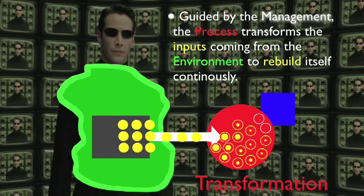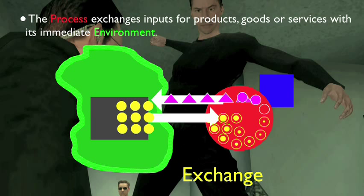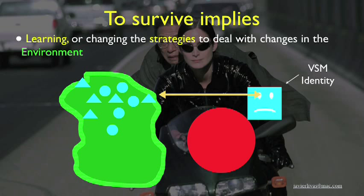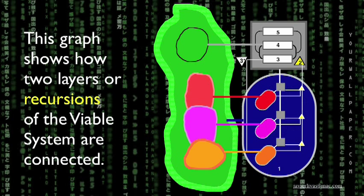Guided by the management, the process transforms the inputs coming from the environment to rebuild itself continuously. The process exchanges inputs for products, goods, or services with its immediate environment. To survive implies learning or changing the strategies to deal with changes in the environment. Viable systems have a sense of identity that guides the management. This graph shows how two layers or recursions of the viable system are connected.